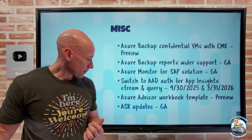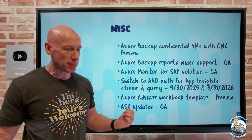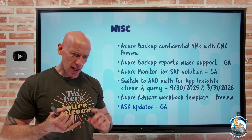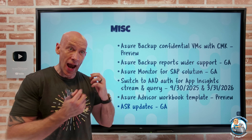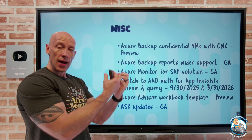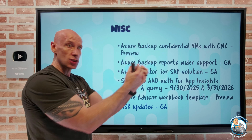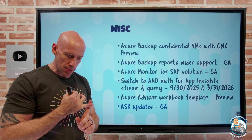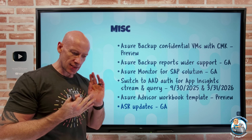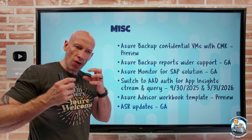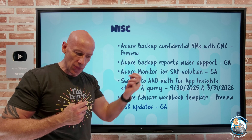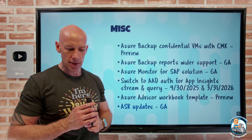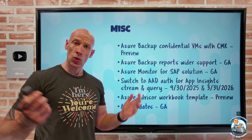And finally, Azure Site Recovery updates in GA, really all about the mobility service. They've added support for additional Linux operating systems. For Azure-to-Azure — where I have a VM in Azure and am replicating it to maybe a different zone or region — that's Oracle Linux 8.7, RHEL 9, and CentOS 9. And for VMware or physical to Azure, that same Oracle Linux 8.7, RHEL 9, and CentOS 9. So those are the changes there.